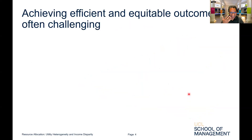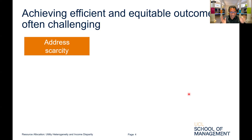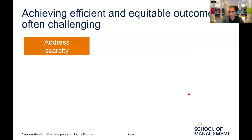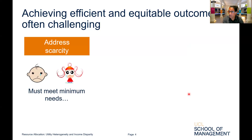In this setup, achieving efficient and equitable outcomes is often challenging for three reasons. First, we need to address a scarcity issue — there may be a minimum amount of water required for survival, and our allocation approach must take note of that. We need to meet minimum needs, but we still need to recover costs, so we need to design the allocation scheme carefully.